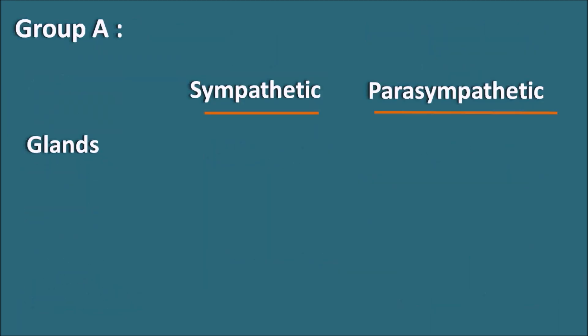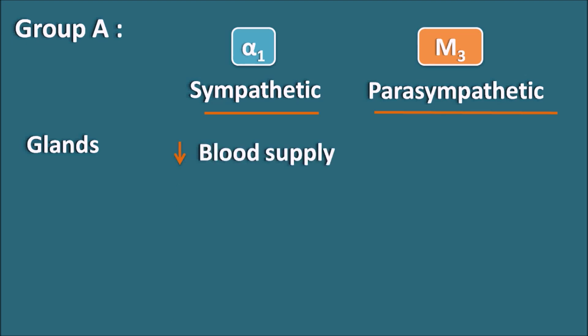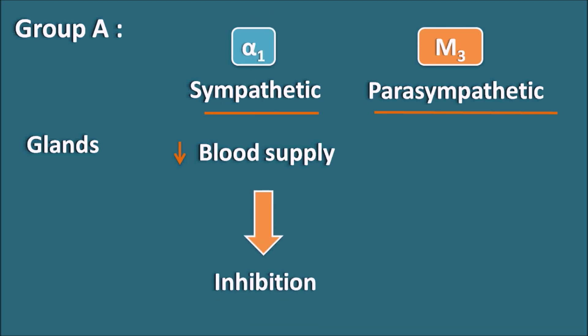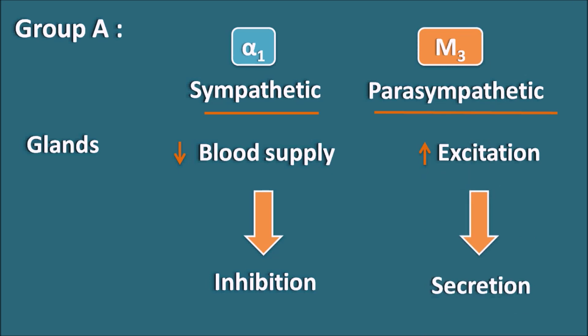The next category is the glands. The sympathetic system works by alpha 1 receptors and the parasympathetic system works by M3 receptors. Even though the sympathetic system does not directly act on the glands, it decreases the blood supply. As the blood supply decreases, the secretion of the glands is going to be decreased, thereby glandular secretion is inhibited.